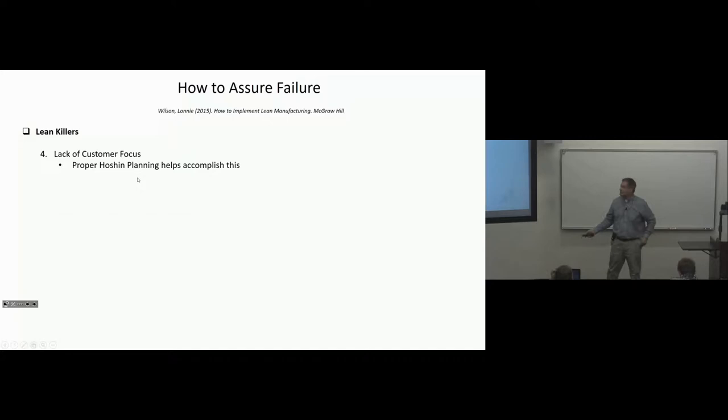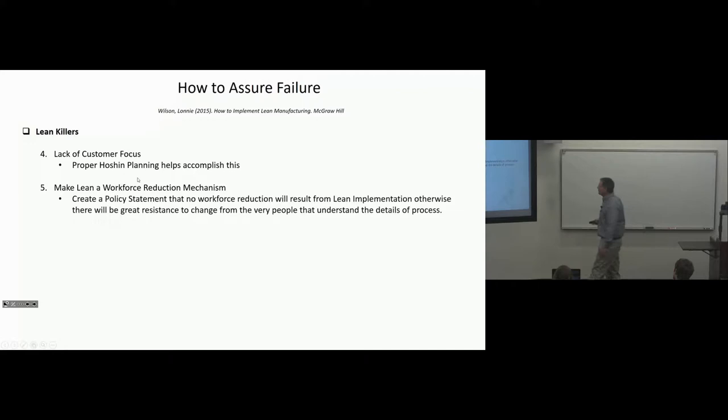Make lean a workforce reduction mechanism. He's saying don't do this. In other words, if people start implementing lean and then people lose their jobs because of the implementation, I guess organizations do that when they really don't believe that people are a critical part of it. But if you're really counting on the vast organization top to bottom to really implement solutions, you don't want to alienate them by having them work hard to get rid of their own jobs. So you should create a policy statement that no workforce reduction will result from lean implementation. Otherwise, there will be great resistance to change from the very people that understand the details of the process. Anybody see a problem with that or a concern about that?